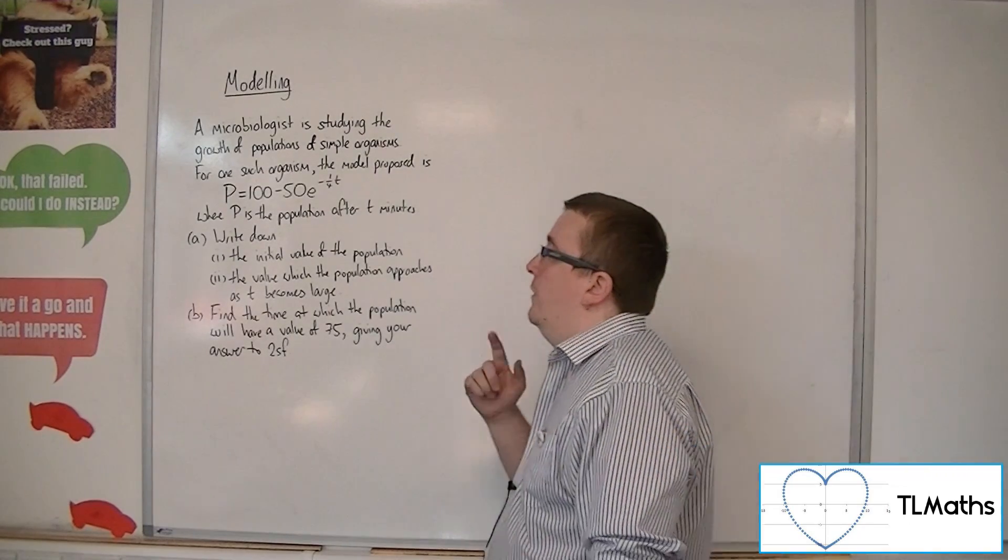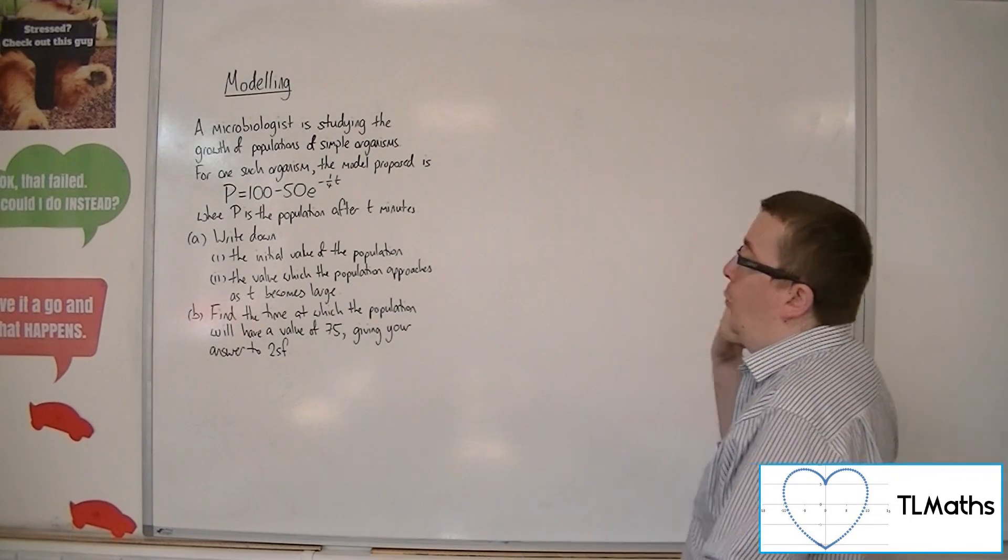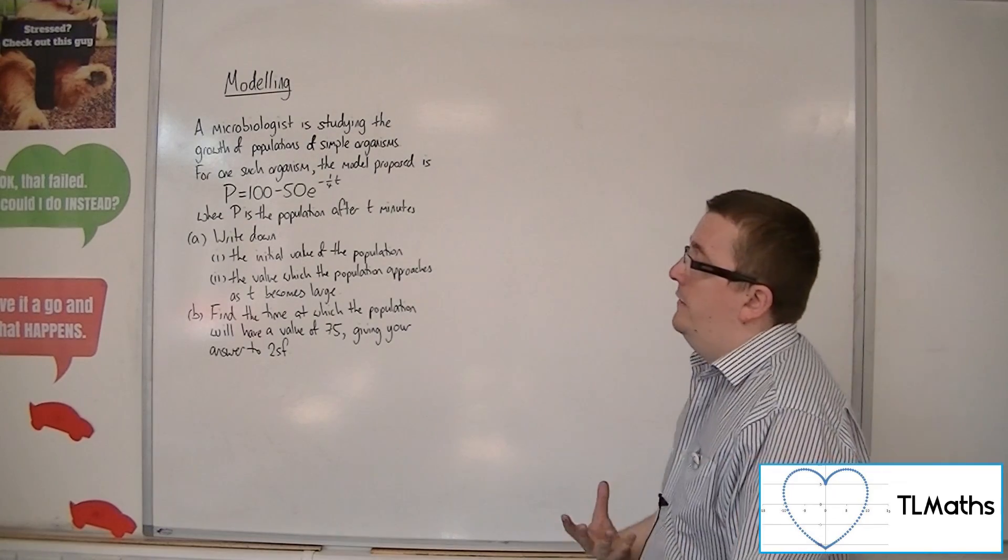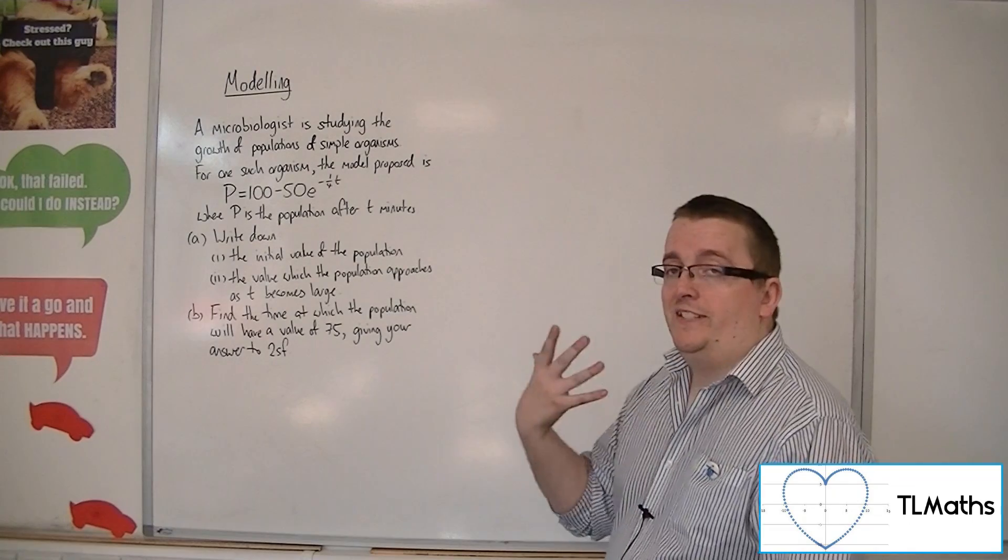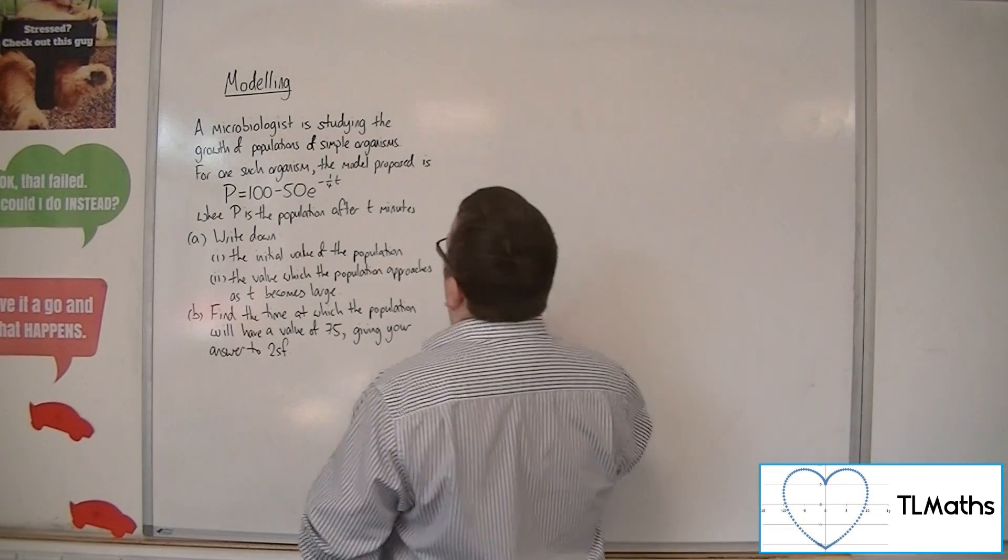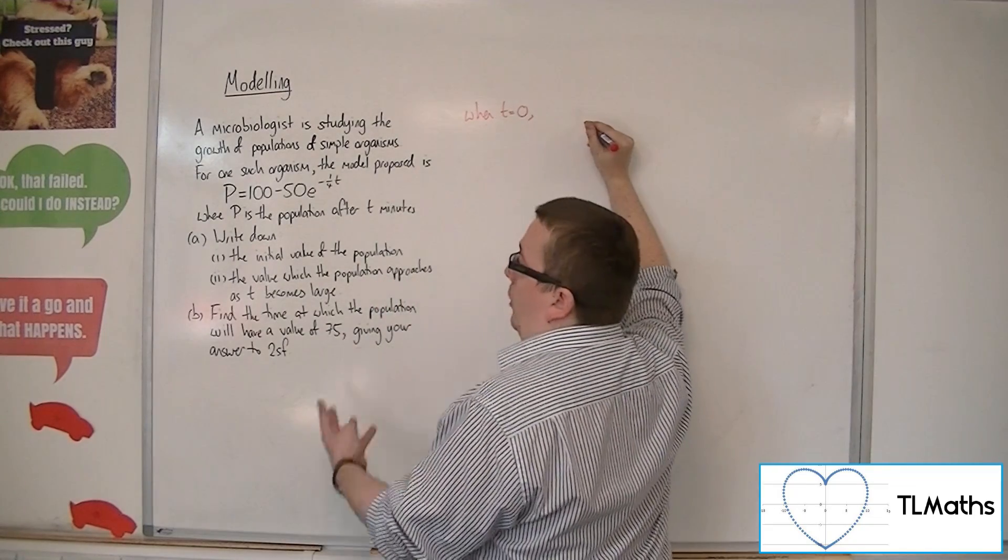Part A, write down firstly the initial value of the population. So when a question asks you to write down the initial value of a population, that means that t is 0. So when t is 0, what is the population?